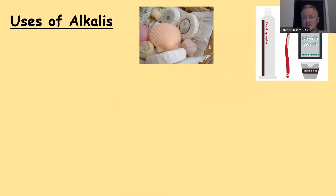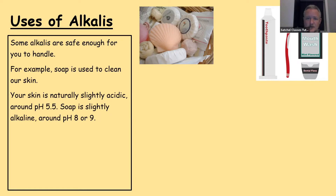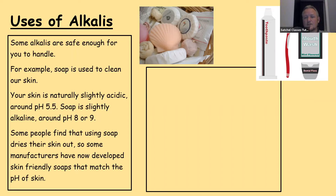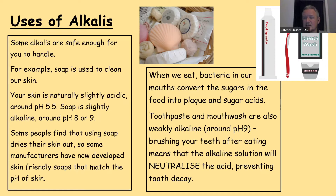Some uses of alkalis: some alkalis are safe enough to handle. Soap is used to clean our skin — your skin is naturally slightly acidic around pH 5.5, and soap is slightly alkaline around pH 8 or 9. Some people find soap dries their skin out, so manufacturers like Dove develop skin-friendly soaps that match the pH of skin. Toothpaste and mouthwash are also weakly alkaline at around pH 9. Brushing your teeth after eating means the alkaline solution will neutralise the acid produced by bacteria, preventing tooth decay.